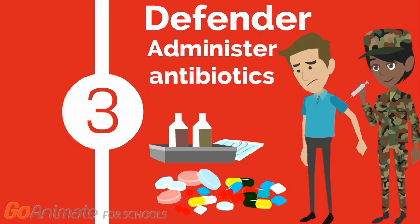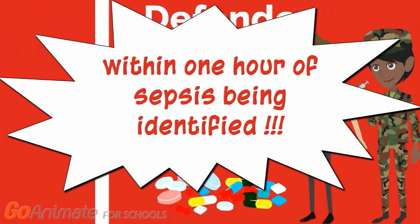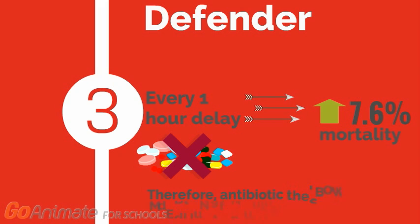Meet Sepsis 3, aka the Defender. Sepsis 3's role is administering antibiotics. It is recommended that antibiotics are administered intravenously within one hour of sepsis being identified. It has been noted that every hour delayed in administering antibiotics in septic shock, mortality increases by 7.6%. After checking allergies and blood cultures, the most appropriate antibiotic is selected. Due to the risk associated with toxicity and resistance, antibiotic therapy is monitored daily.